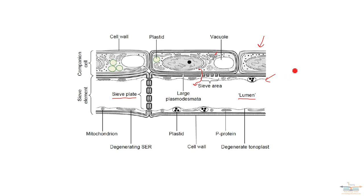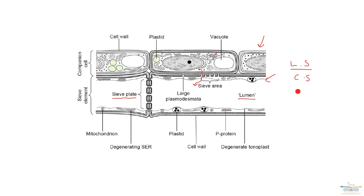This drawing is referred to as a longitudinal section — you need to know your orientation of these images for exam questions. This is a longitudinal section because it's looking down the tissue. The other type is a cross section, which looks quite different, as you'll see shortly.